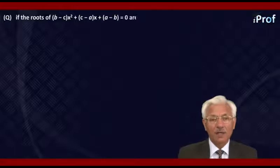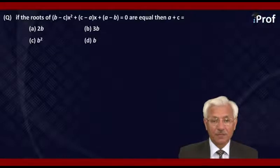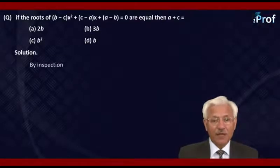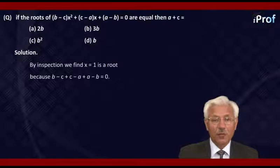If the roots of (B minus C)X squared plus (C minus A)X plus (A minus B) equal to 0 are equal, then A plus C is equal to — options are 2B, 3B, B squared, or B. By inspection, we find that X equal to 1 is a root, because when we put X equal to 1, we get (B minus C) plus (C minus A) plus (A minus B) equal to 0. Hence, 1 is a root.